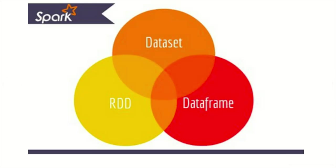As you can see on the screen, we have illustrated these three APIs in a fashion where some portion of each of the three terms are overlapped, meaning they share some common responsibilities and common features. We can easily migrate from one API to another using available methods. That's the reason it is shown like this. So first, we start with the RDD.